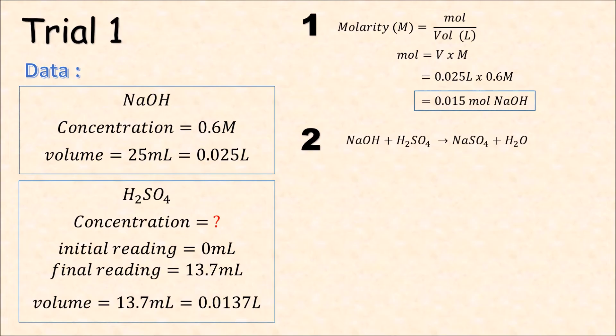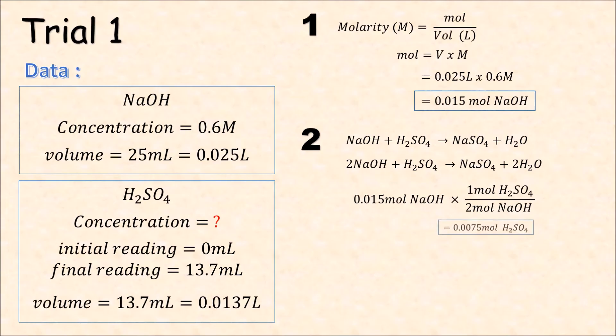Step 2. We will write the equation: NaOH plus H2SO4 will give Na2SO4 plus H2O. Then we need a balanced equation. Let's get the number of moles in sulfuric acid. So 0.015 mol of NaOH. We know from the equation that 1 mol of sulfuric acid is 2 mol of NaOH. So we will convert it. So we will get 0.0075 mol of sulfuric acid.